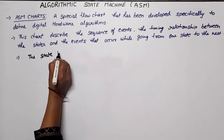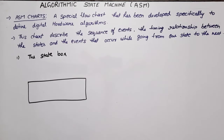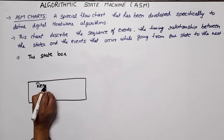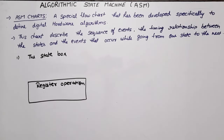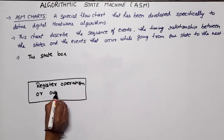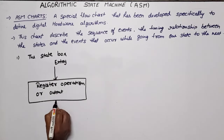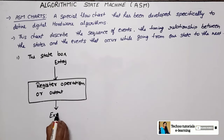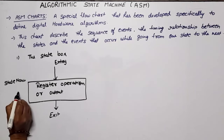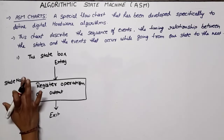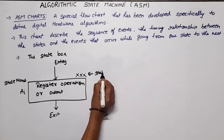An ASM chart is a special flowchart that has been developed specifically to define the digital hardware algorithms. This chart describes the sequence of events — what relationship they have, how present state is related to next state. Now let us discuss the main elements. ASM consists of three basic components. The first is the state box. The general symbol is a rectangle box. Inside this, we can write register operations or outputs. There is an entry point and an exit point. On the side, the state name is written — for example, S1 — and also a binary value can be assigned to the state.